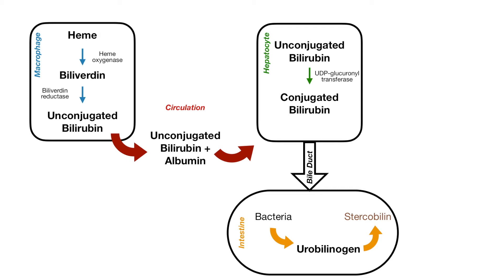Conjugation is done through UDP glucuronosyltransferase — try to say that a few times! And unlike the unconjugated bilirubin, the conjugated bilirubin is water soluble, so it does not need to be bound by albumin. This conjugated bilirubin is then excreted into the bile ducts and enters the intestine.